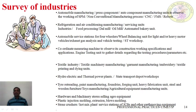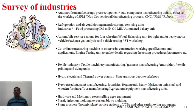The following are the various types of industries that may be visited: automobile manufacturing industries, press component and auto component manufacturing industries, non-conventional manufacturing process industries, refrigeration and air conditioning manufacturing industries, food processing industries, various automobile industries, wheel balancing units, exhaust gas analysis and vehicle testing industries, coordinate measuring industries, textile industries, hydroelectric and thermoelectric power plants, state transport workshops and depots, tire retreading industries, paint manufacturing industries, foundries, forging and sheet metal workshops, heavy fabrication units, steel plants, wooden furniture work industries, and toy manufacturing industries.